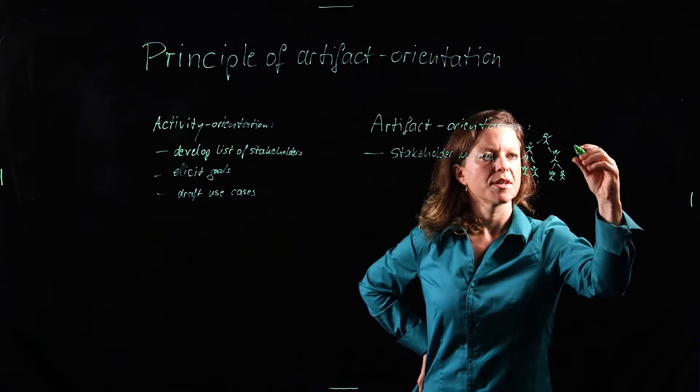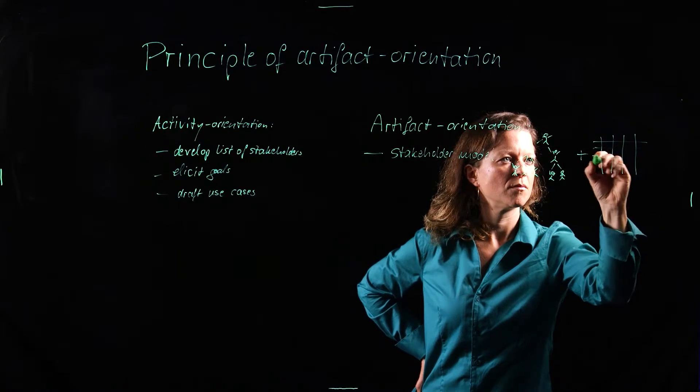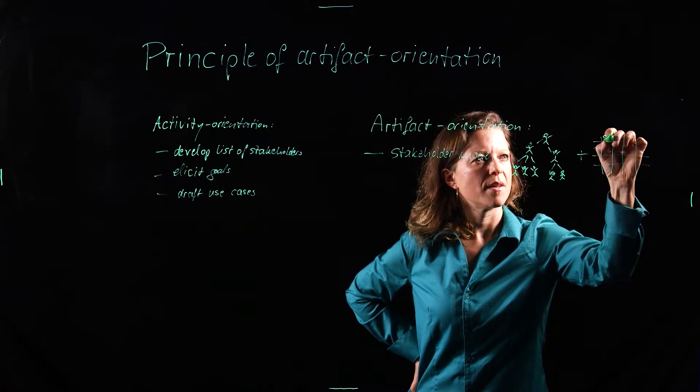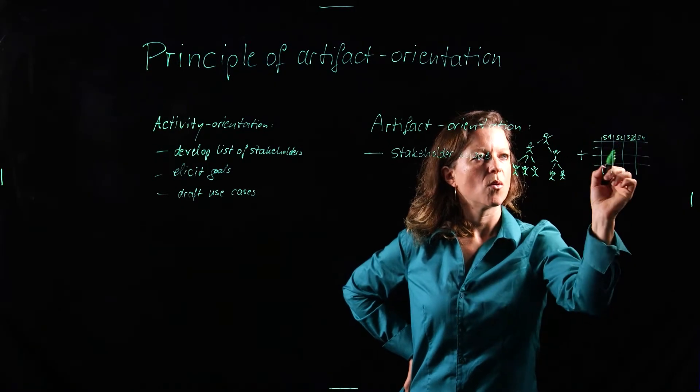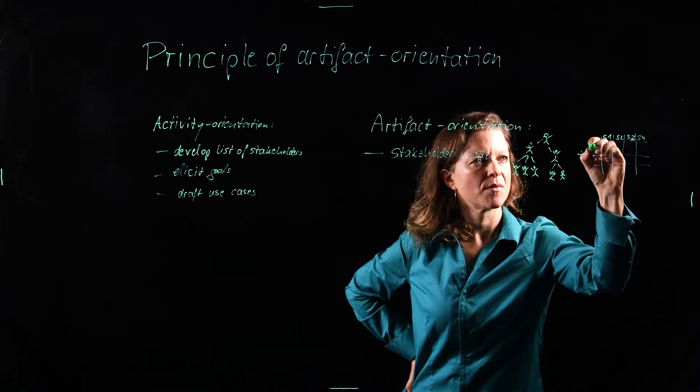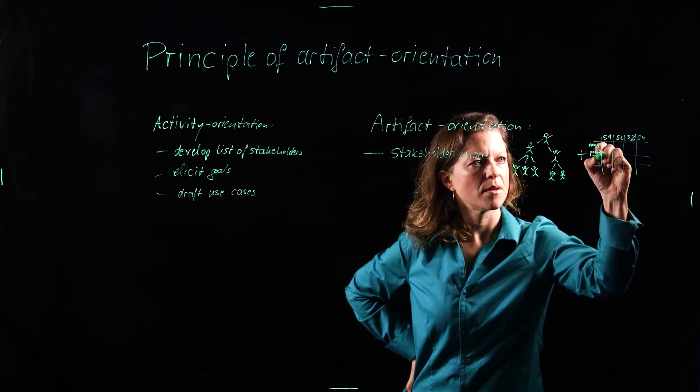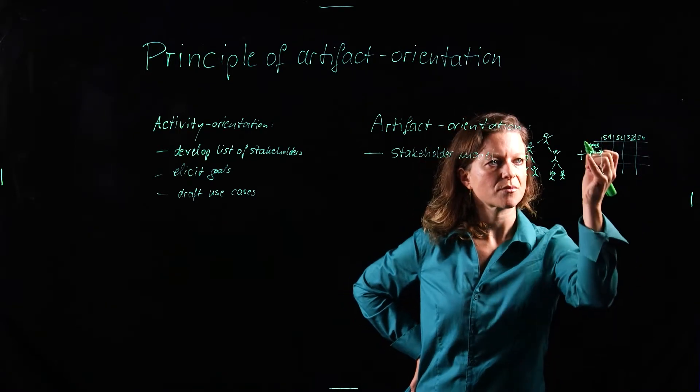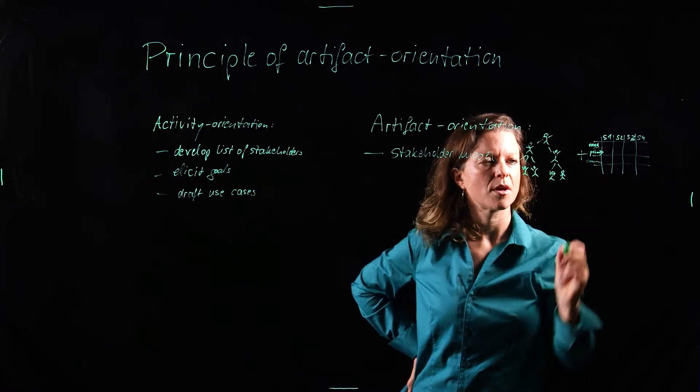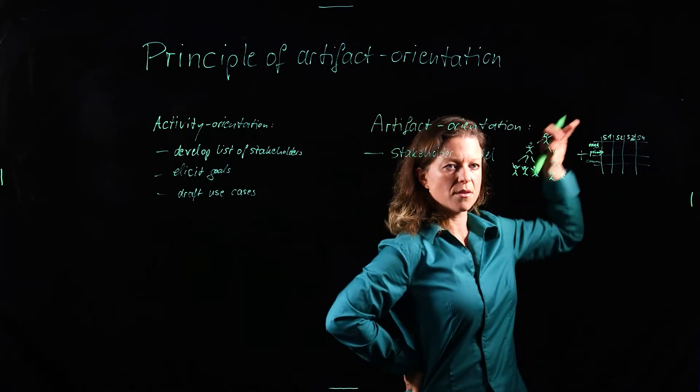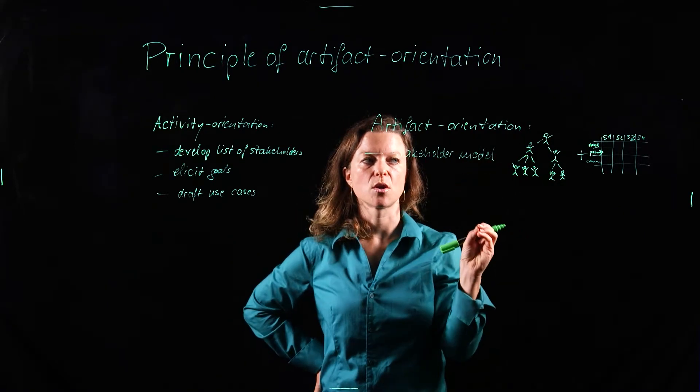So this is the hierarchy. And then we'll have a stakeholder matrix that says for every stakeholder what characteristics they have. So what is their main need? What is their priority? So how important are they? And how to communicate with them? Are they right in the next office? Are they on a different continent? So that's what our artifact for the stakeholder model would look like.